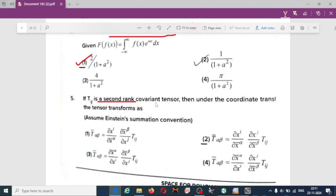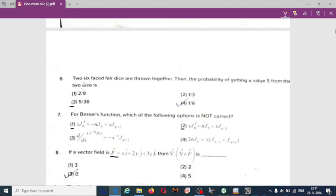If t_ij is a second rank covariant tensor, then under coordinate transformation the tensor transforms as - if you observe all four equations, the transformation for the second rank t_ij is given by option 2: t bar alpha beta equals ∂x^i/∂x̄^α · ∂x^j/∂x̄^β · t_ij. For the next question, if two six-phase dice are thrown together, the probability of getting a value of five from the two dice is 11 divided by 36.